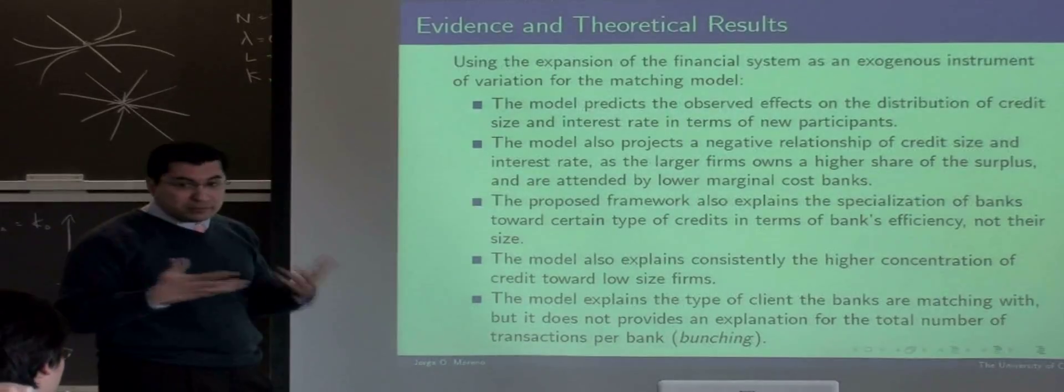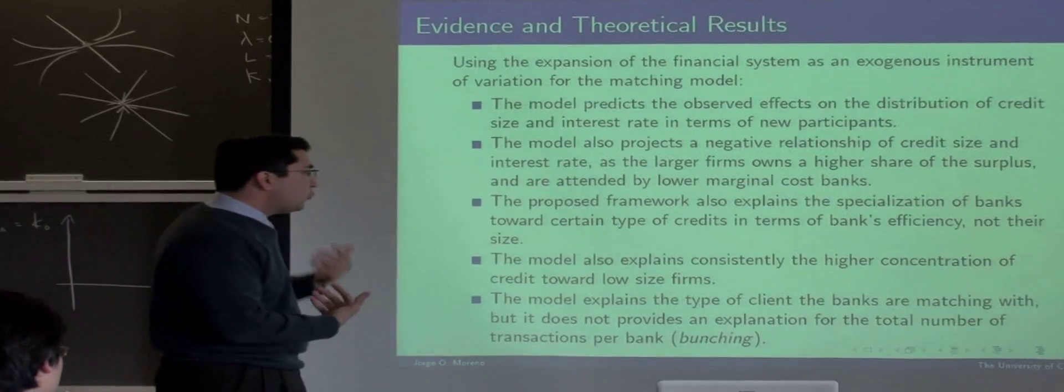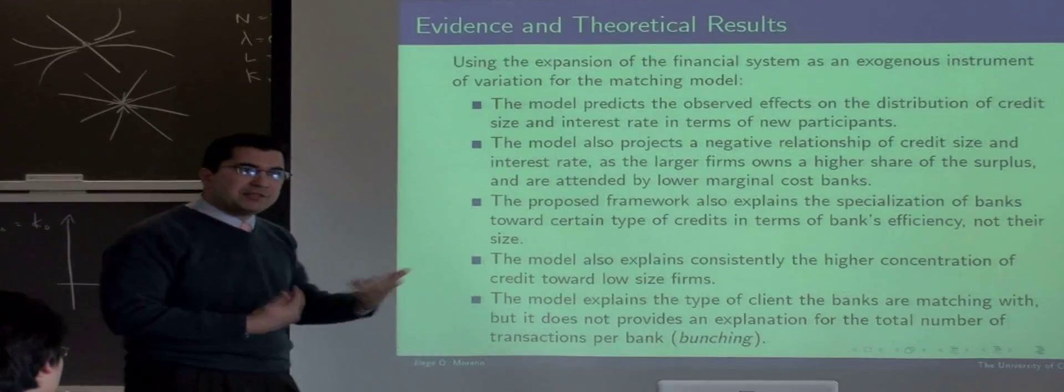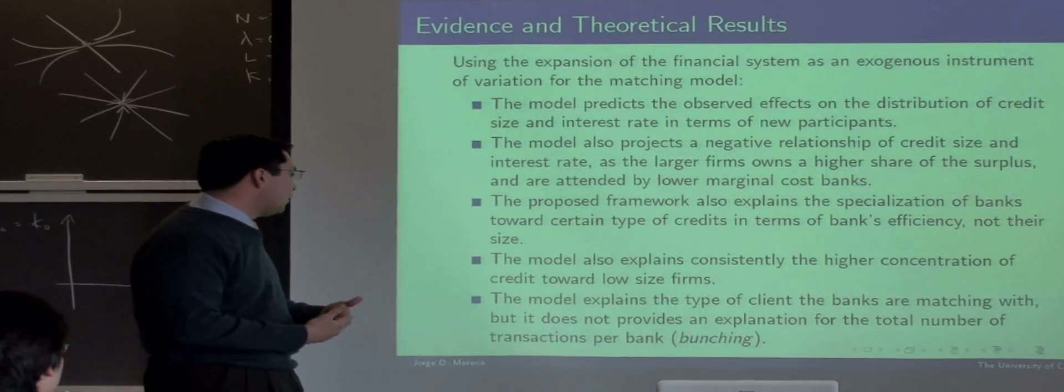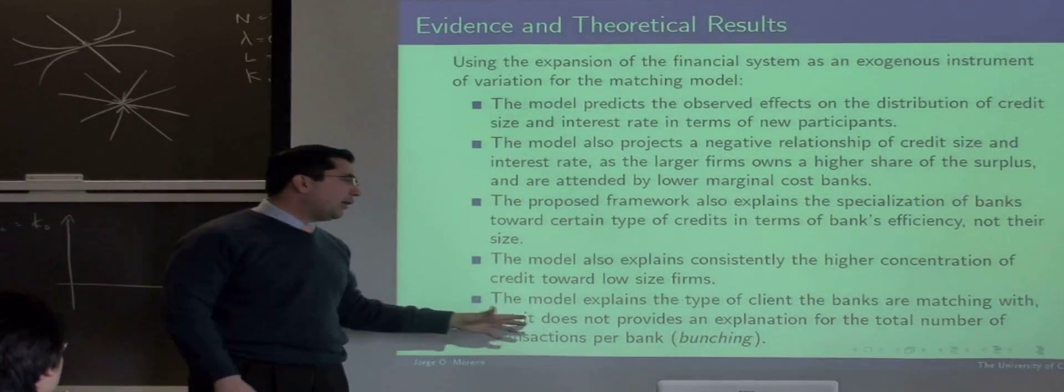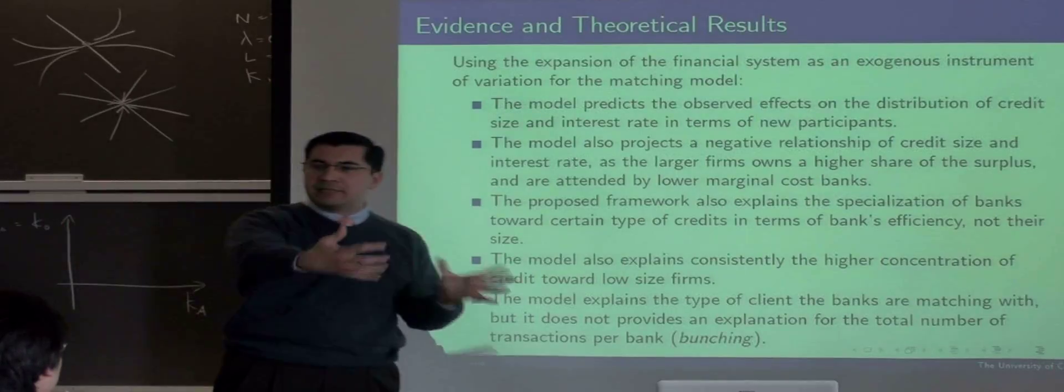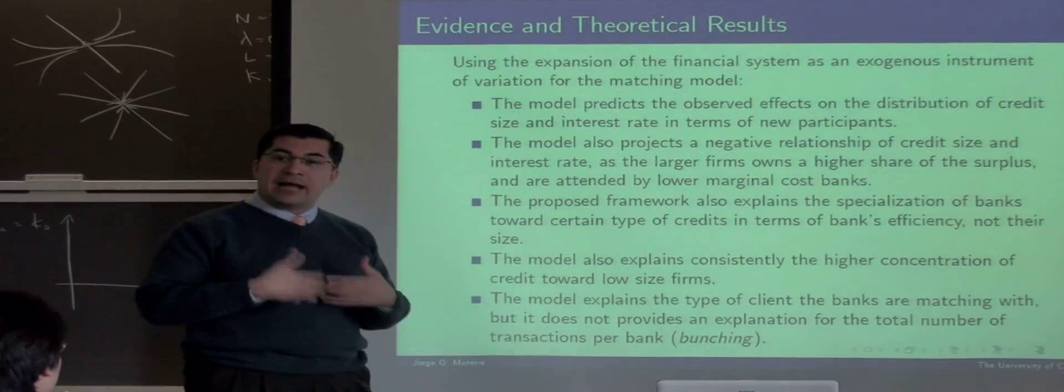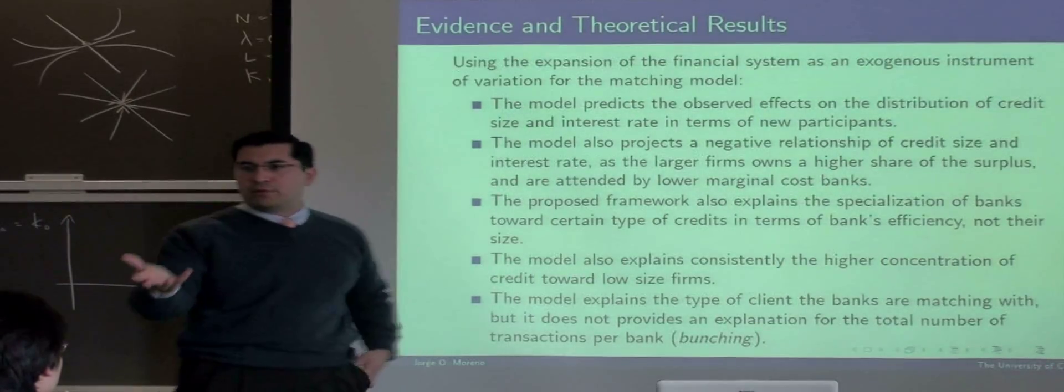Finally, what the model explains is the matching between banks, or financial intermediaries, and clients. But it does not provide an explanation for the extensive margin of number of contracts attended by banks, which is the number of contracts by banks.